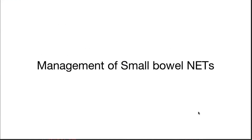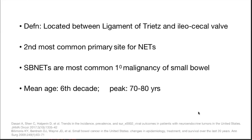Now, management of small bowel neuroendocrine tumors — by definition, these tumors are located between the ligament of Treitz and ileocecal valve. It is the second most common primary site for NET in the GIT. Small bowel is also the most common site for primary small bowel malignancy. Mean age of presentation is the sixth decade, with peak around 70 to 80 years.